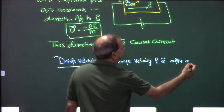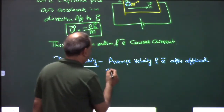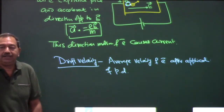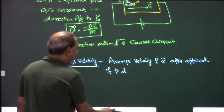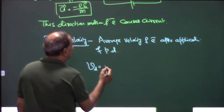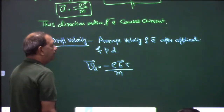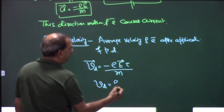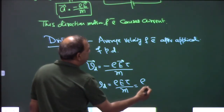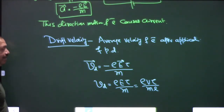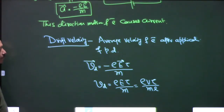Heat is generated because of frequent collisions. Drift velocity is the average velocity of electrons after potential difference is applied. When we apply a potential difference, this average velocity is called drift velocity. It equals −eEτ/m, or in terms of magnitude eEτ/m = eVτ/mL, where V is potential difference, E is electric field, and L is the length of the conductor.